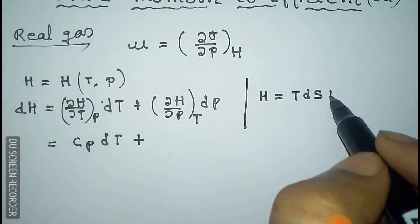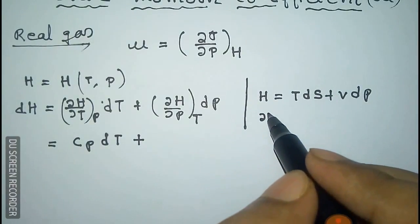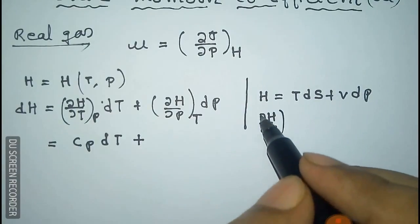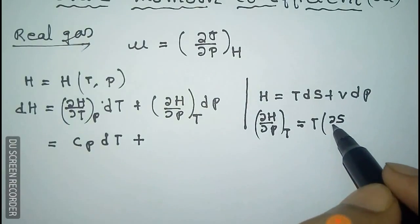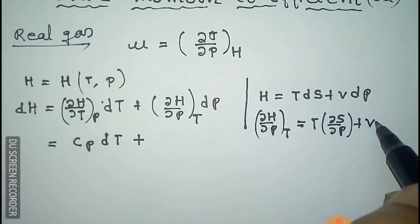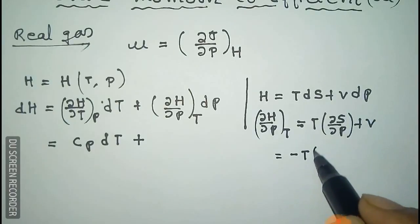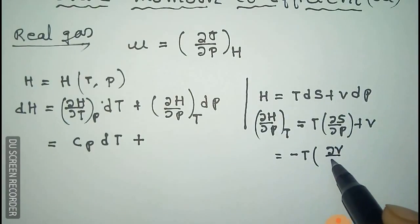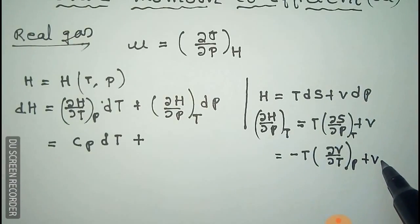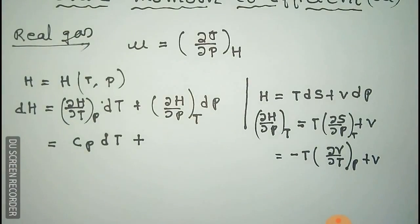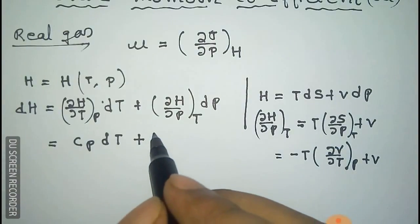We know that H equals TdS plus VdP, so del H del P at constant temperature will be T del S del P plus V. After Maxwell transformation, del S del P becomes minus del V del T at constant pressure plus V. This is the Maxwell relation, and now we put this relation in our equation.